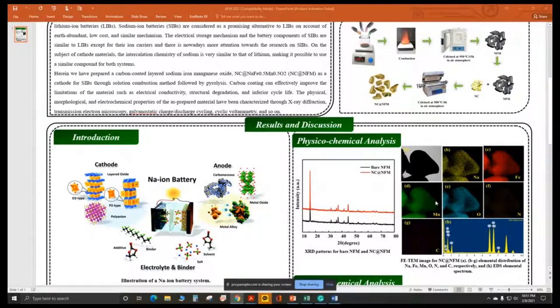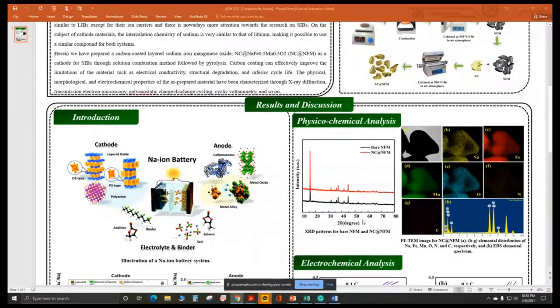To confirm the elemental distribution of the material, we performed FESEM. From that, the materials showed non-spherical structures. To confirm the elemental distribution, we performed EDS mapping. From that, we concluded that sodium, iron, manganese oxide, and nitrogen carbon are equally distributed on the surface of the active material.